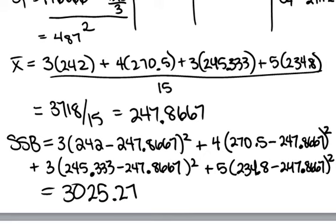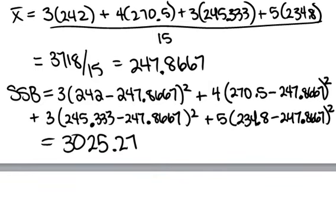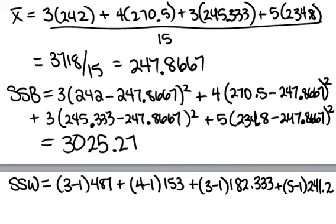The next thing we want to find is our SSW, and our SSW can be found by taking your sample size minus one times your variance for each group and adding them all together. So what we have here is your sample size of three minus one times the variance for group one, which was 487. Same for group two, group three, group four. We add them all together, so we find our sums of squares within to be equal to 2762.47.